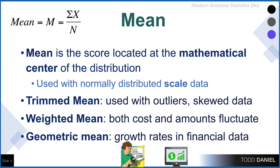The trimmed mean cuts off the upper and lower 5%, giving us a more representative middle 90%. A weighted mean is used when we have both an average cost but the amounts fluctuate, such as buying gas — the average price fluctuates every week, but so does the amount of gas that we buy, so we weight the cost by the number of gallons purchased. The geometric mean is used mostly with financial data for analyzing growth rates, where values on any given day or week are dependent upon values from previous days or weeks.